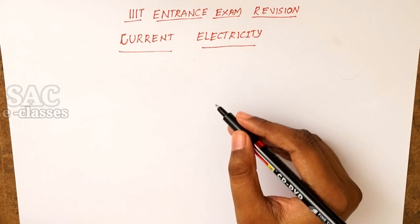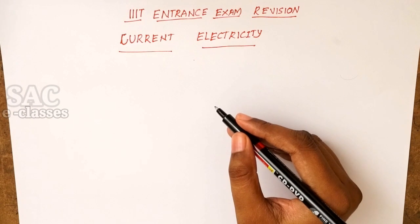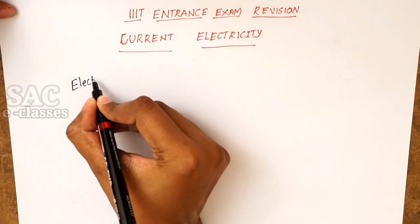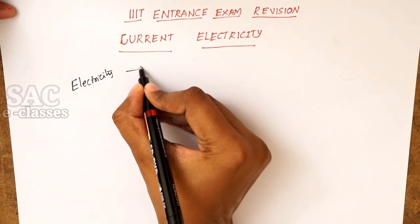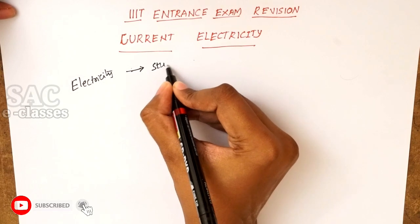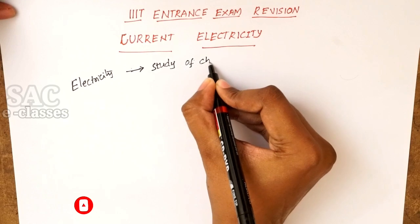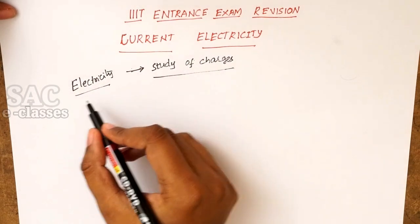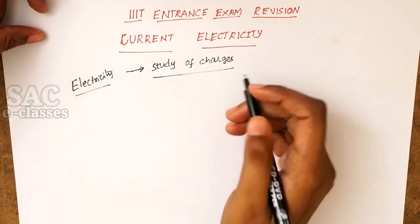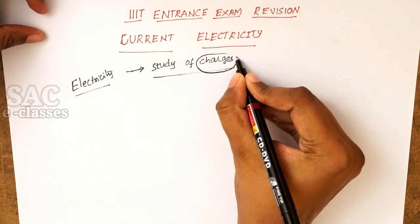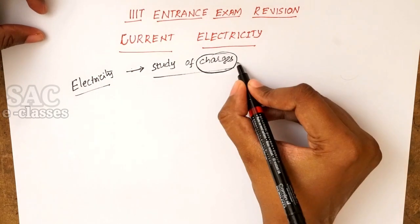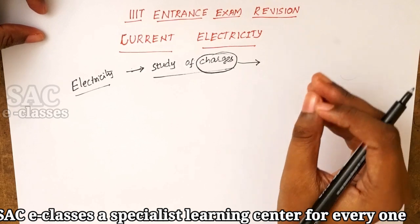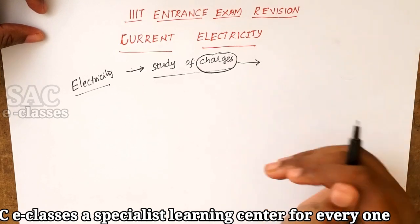We are going to learn about the most important concept of physics, that is current electricity. Before going to learn what electricity is, the word electricity defines itself — it is about the study of charges. Charge is a physical property that experiences a force of attraction whenever it is placed in an electromagnetic field.